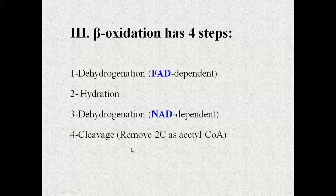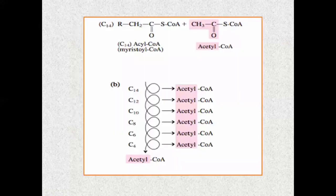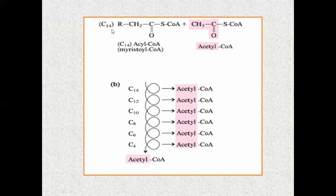The number of carbons in fatty acids can vary. Here is an example: a fatty acid with 14 carbons. This example applies to even-carbon fatty acids. This is for the even-carbon fatty acid which has 14 carbons.